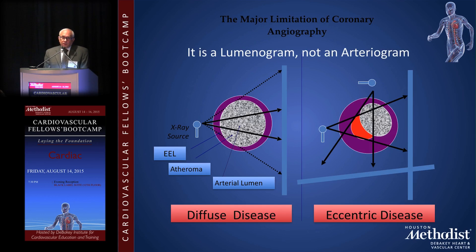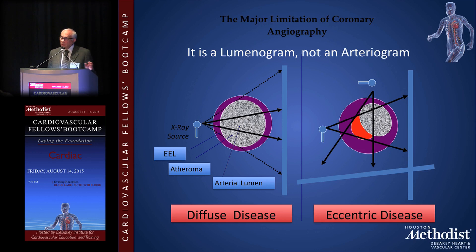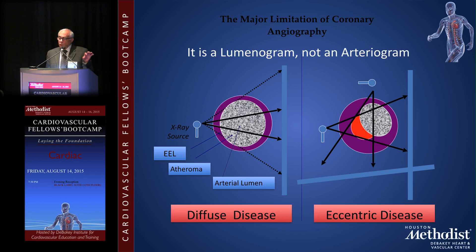A major limitation of coronary angiography that you really have to recognize is that it is a luminogram — not a true arteriogram. It shows the channel in which the dye is flowing, but it doesn't show the artery itself. On the left is an artery with diffuse disease, but the lumen is in the center. When you project through it, you see that lumen on the X-ray image — not the full vessel wall.